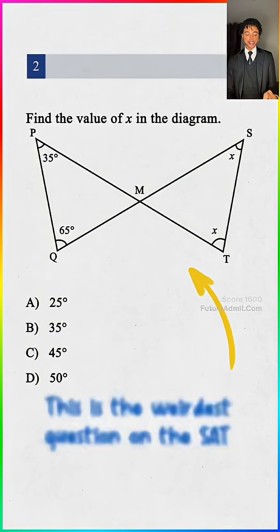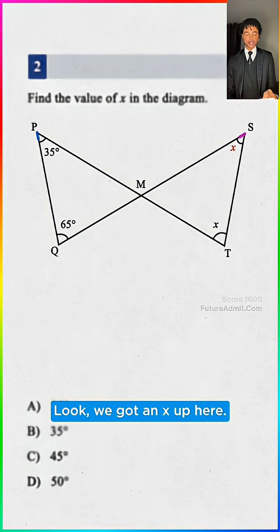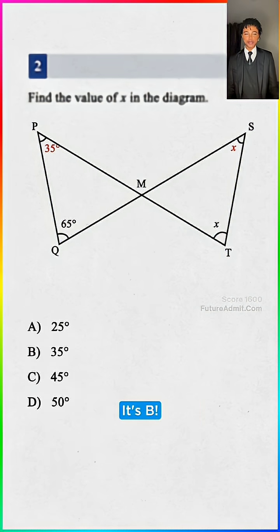This is the weirdest question on the SAT. Find the value of x in the diagram. Easy! We got an x up here, and both these triangles look the same, like a mirror, so x must be the same as p. 35, it's p!